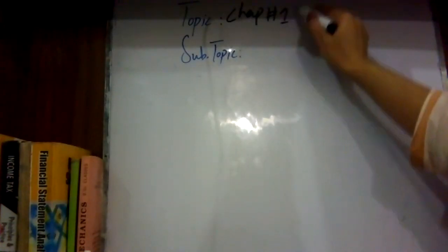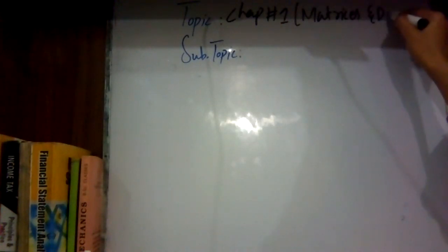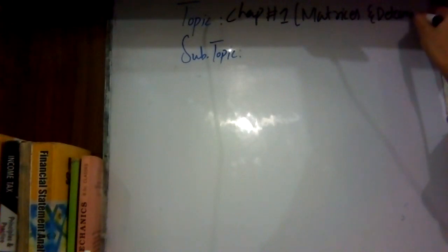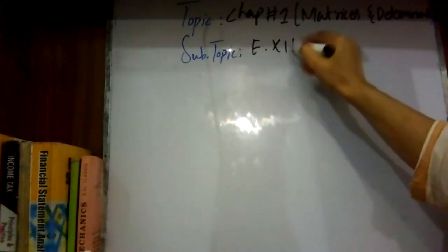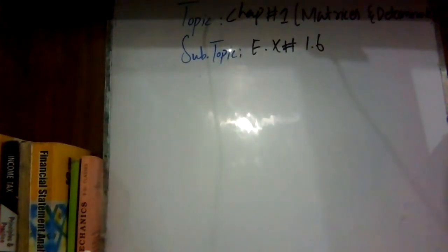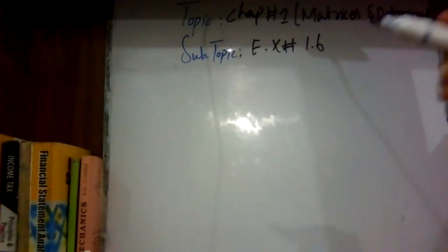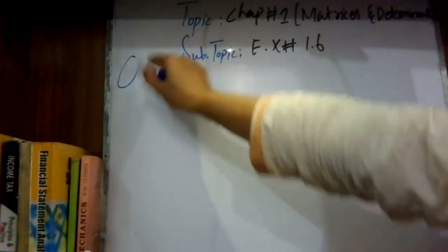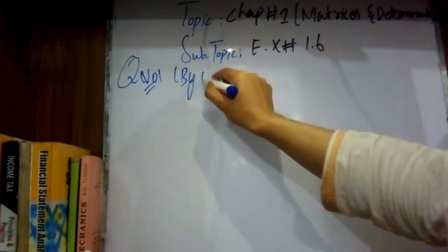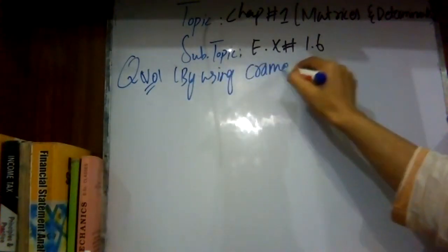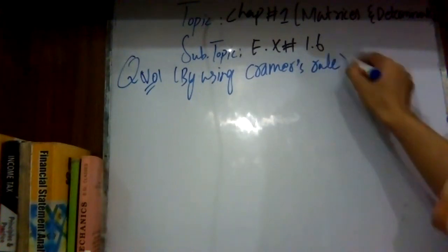Chapter number one: Matrices and Determinants. The topic is size number 1 by 6. Question number one is to solve the linear equations by using matrix inversion method and Cramer's Rule. Today the main focus is on question number one using Cramer's Rule.